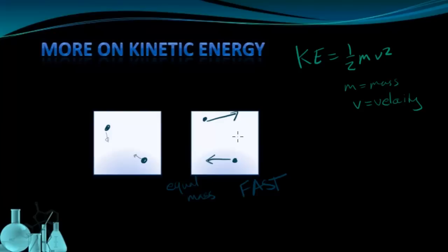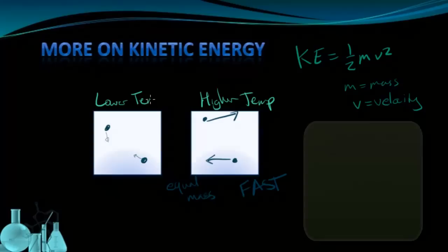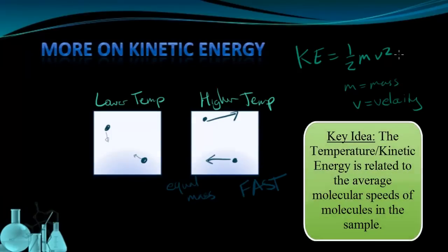And if the average kinetic energy of these molecules on the right is greater than the average kinetic energy of the molecules on the left, then the sample on the right has a higher temperature than the sample on the left. The key idea here is that temperature, or kinetic energy, is related to the average speed of the molecules in the sample.